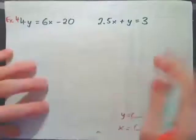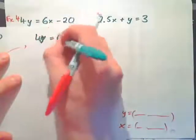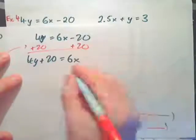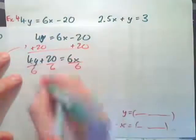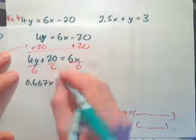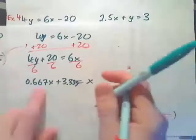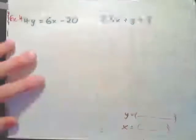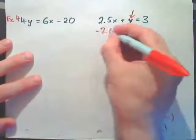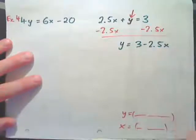Another option is to solve for x from the first equation by adding 20 to both sides and dividing by 6, but that produces messy decimals. The easiest approach is to look at the second equation — y is almost by itself already. Just subtract 2.5x from both sides to get y equals 3 minus 2.5x. That's the quickest way.